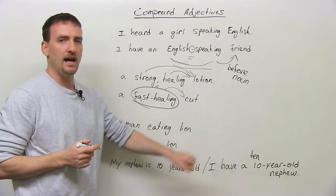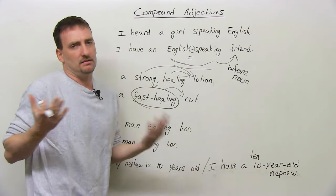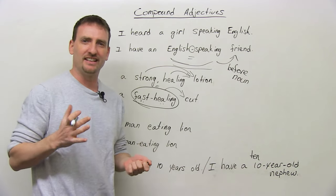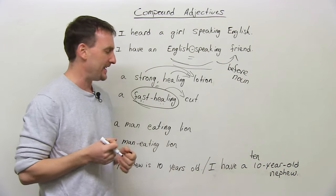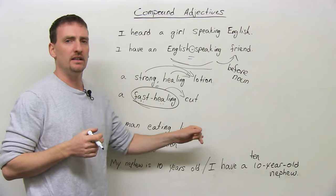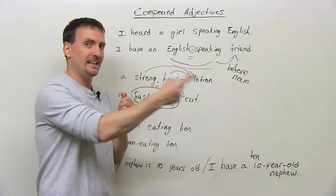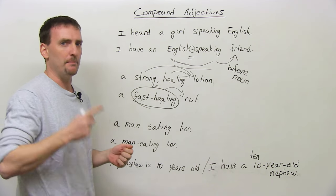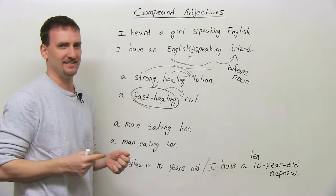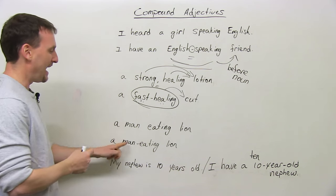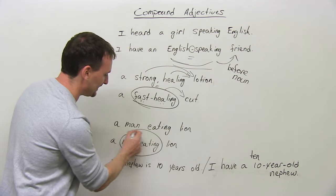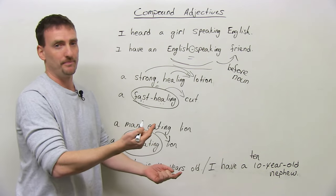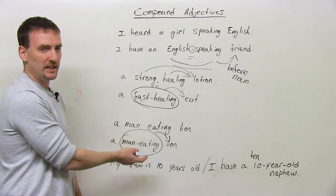Consider 'a man eating lion.' Without the hyphen, this could mean a man who is eating a lion. But 'a man-eating lion' — with the hyphen — describes a lion who eats people. Very different meaning. The hyphen makes clear which noun the compound adjective modifies.